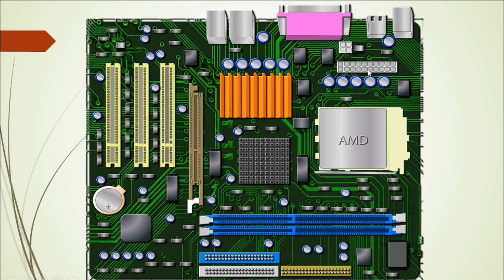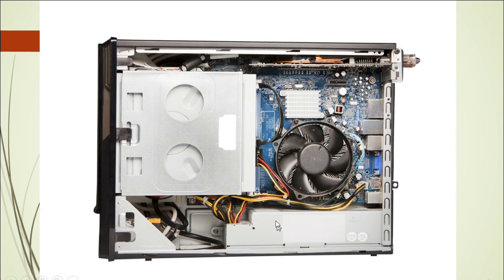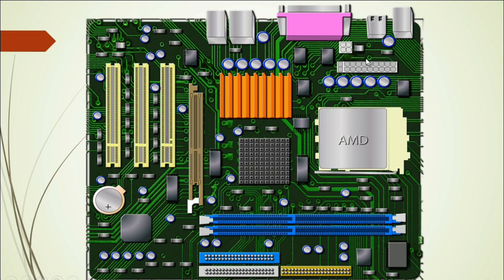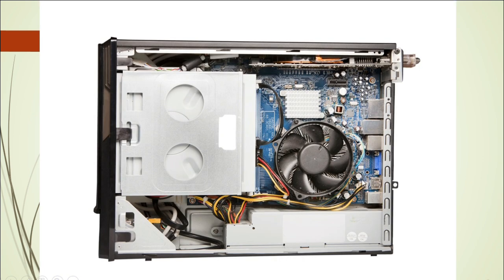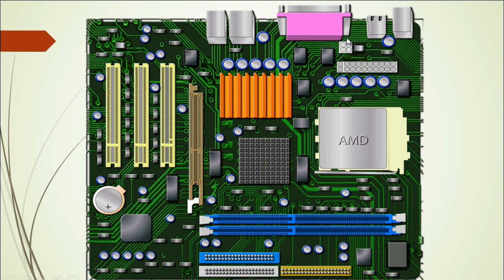This is the ATX connector — the power for the motherboard comes from here. We connect the power supply jack exactly like this. This part gives power to the motherboard through this connection. And this four-pin connector provides power specifically for the CPU — this jack or connector is dedicated to the CPU.